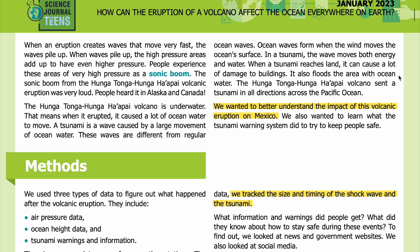In a tsunami, the wave moves both energy and water. When a tsunami reaches land, it can cause a lot of damage to buildings and floods the area with ocean water. The Hunga Tonga-Hunga Ha'apai volcano sent a tsunami in all directions across the Pacific Ocean. We wanted to better understand the impact of this volcanic eruption on Mexico and learn what the tsunami warning system did to try to keep people safe.